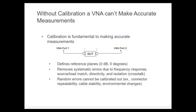All of those systematic errors get removed in this calibration process. In addition, there's a whole other class of errors that are random in nature and cannot be fully calibrated out. Those relate to connector repeatability, cable stability, and changes in the environment that can cause drift and introduce error. What we try to do is control those factors as much as possible to minimize them and gain the most accurate measurement we can.